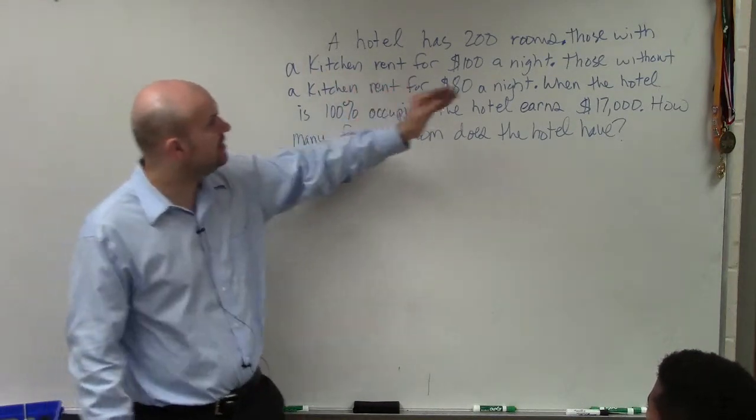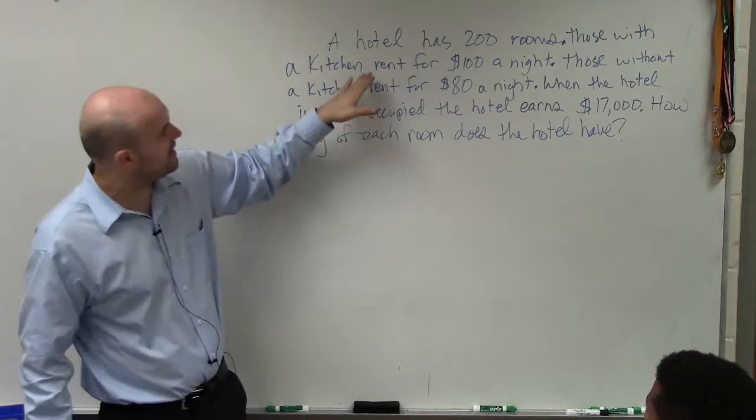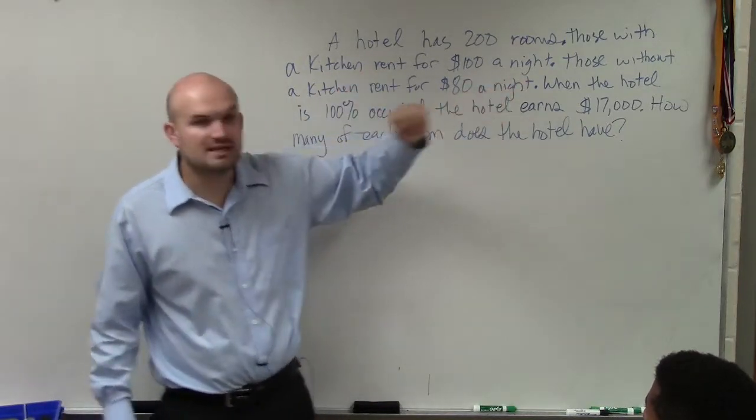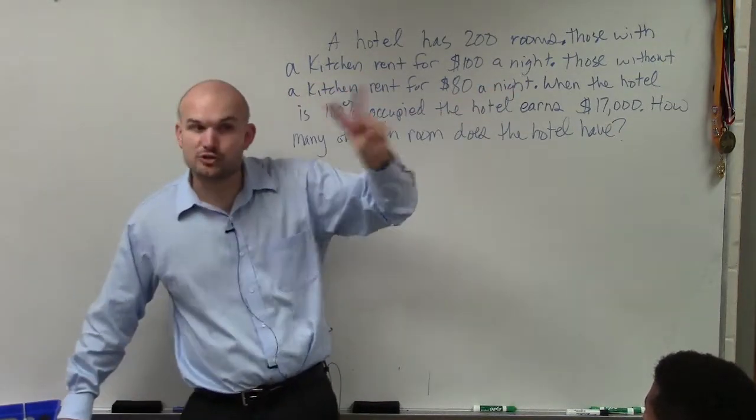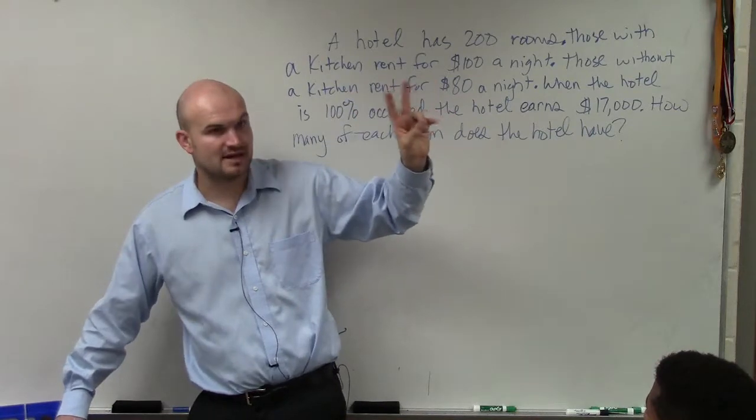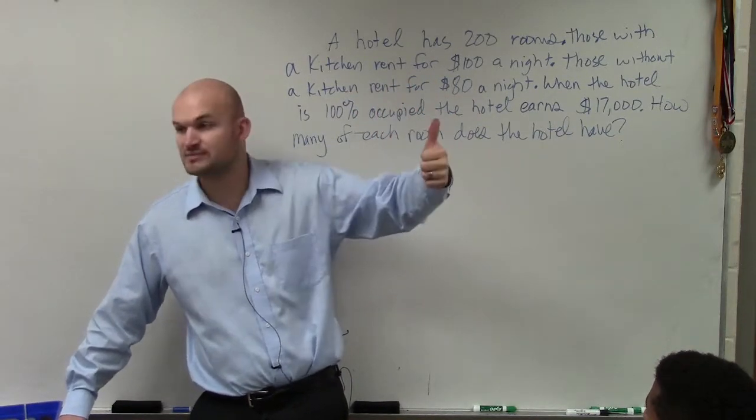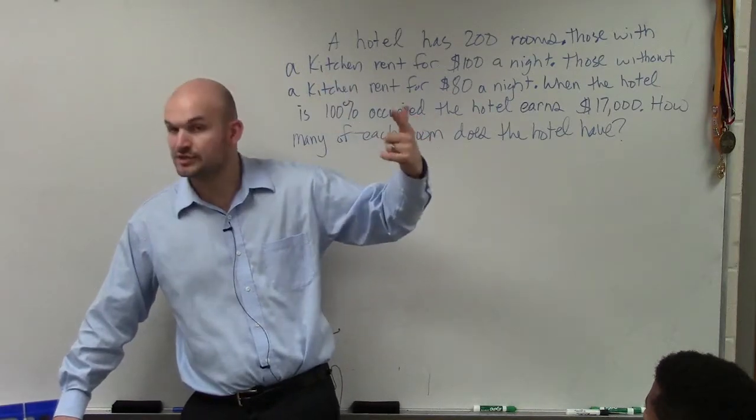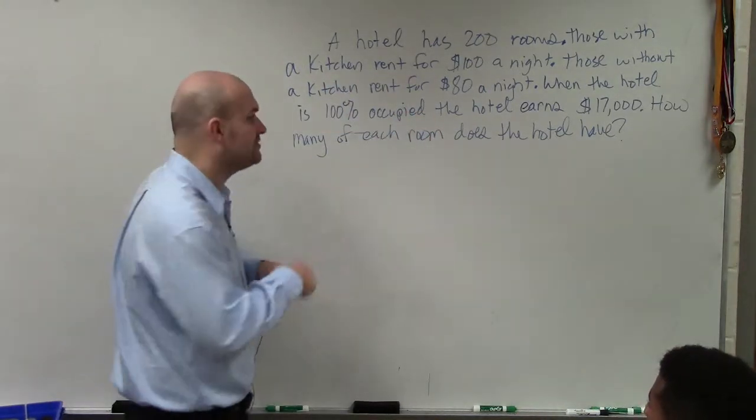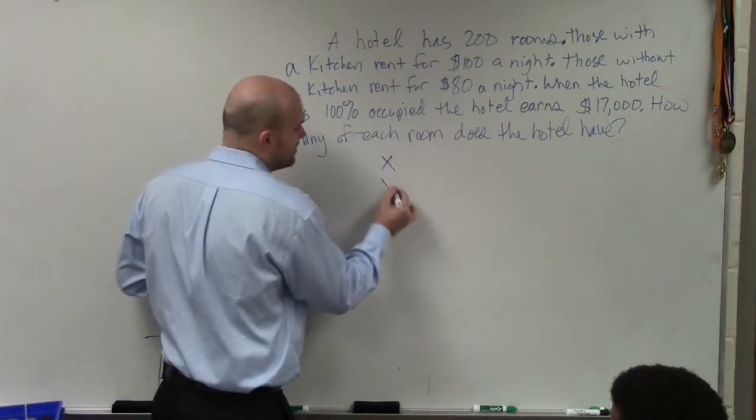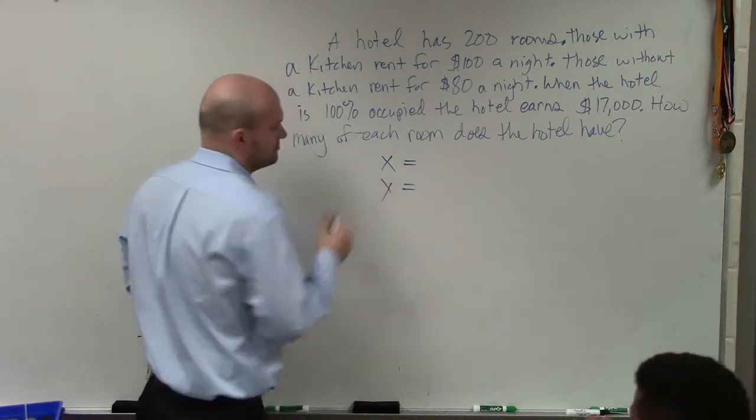So we go back through the information, and it says there's rooms that have a kitchen, and there's rooms that do not have a kitchen. So therefore, there's two things that we need to find how many they have. That's what we're trying to figure out. We want to know how many rooms have a kitchen and how many rooms don't have a kitchen in the hotel. So to find those values, I need to assign them variables.